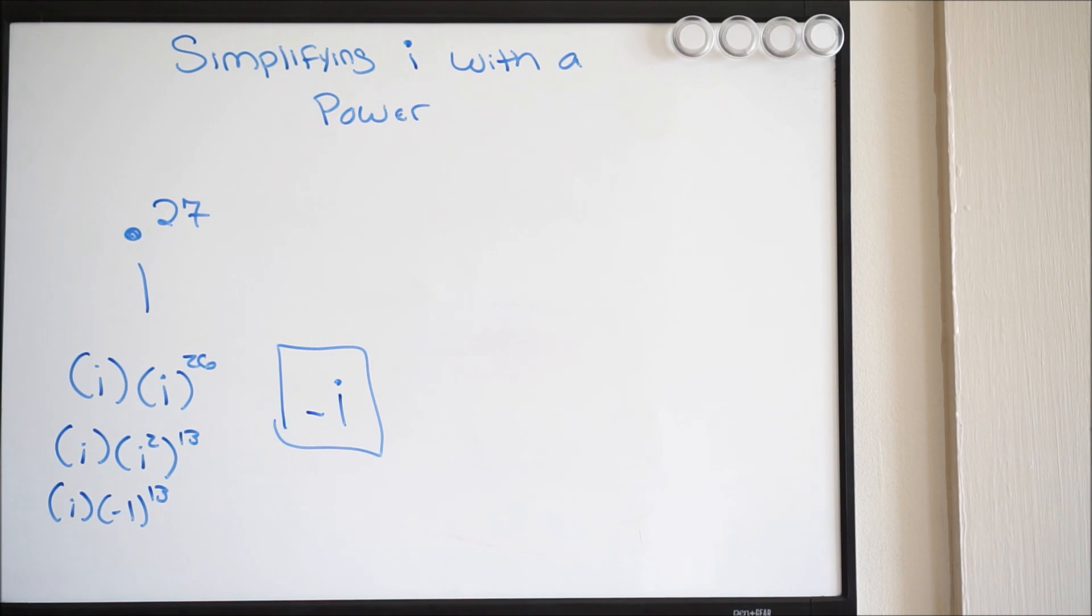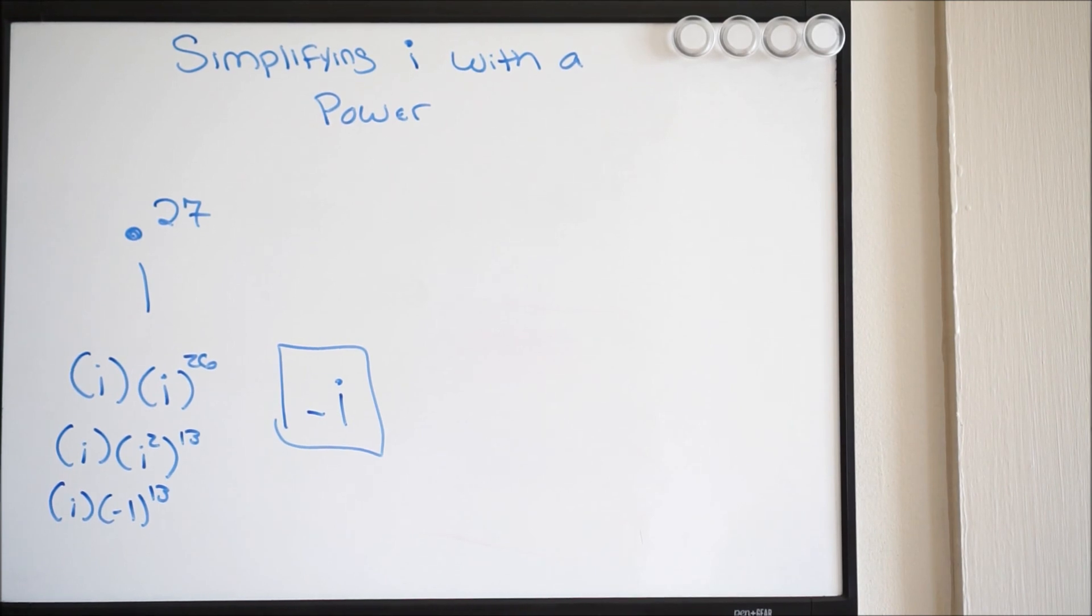And that's it. So again, when trying to simplify i when it has a power, your goal is to make the exponent even, and then you can go ahead and do your work from there.